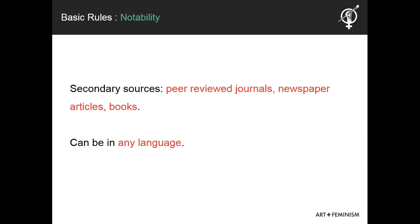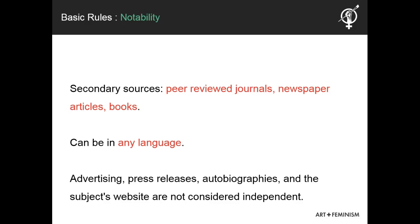Your sources also need to be independent of the subject. This excludes works produced by the article's subject or someone affiliated with it. For example, advertising, press releases, autobiographies, and the subject's website are not typically considered independent. None of this ensures that your article will not be challenged on the basis of notability, however. A more in-depth discussion might conclude that the topic actually should not have a standalone article, perhaps because it violates what Wikipedia is not — particularly the rule that Wikipedia is not an indiscriminate collection of information.